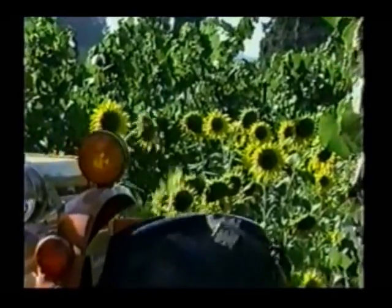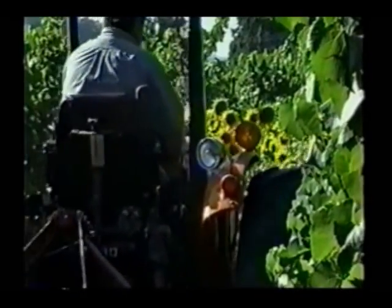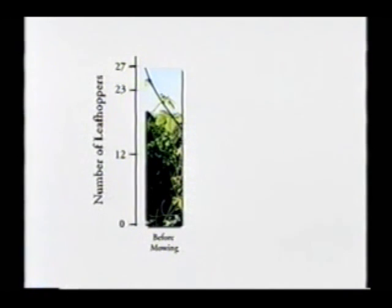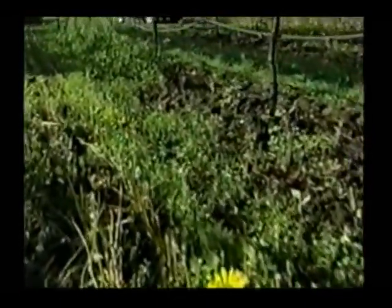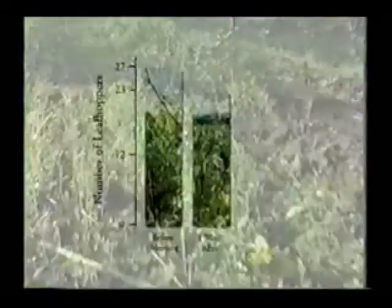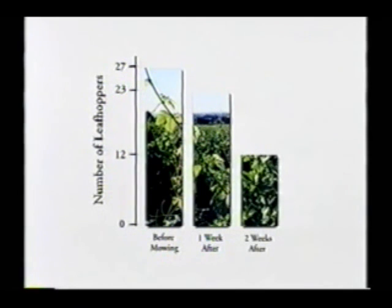The cover crops provide such an abundance of food for many kinds of predators and parasites that getting them to move out of the cover crop and into the vines can be a problem. Here, the mower works its way down the rows. As it cuts the cover crop, this forces the insects out and into the vines. This graph shows the level of infestation of the leafhopper pest on vines next to the cover crop prior to mowing. Once the crop was mowed and Anagrus wasps and other predators — all enemies of the leafhopper — moved into the adjacent vines, a week later the number of leafhoppers had declined, and two weeks later the leafhopper decline was even more dramatic.